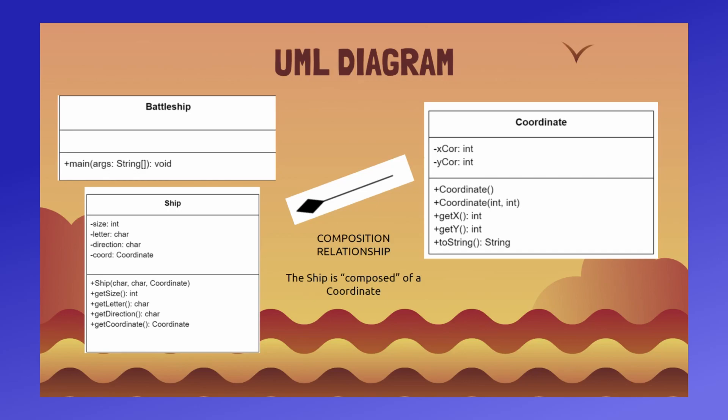Next, the Ship class defines what a ship is with specific characteristics such as the size, letter, direction, and the coordinate of the front of the ship. This class allows for the creation of a ship and getter methods to use in other classes. One thing to note is that the Coordinate class and the Ship class have a composition relationship because the ship is composed of a coordinate.